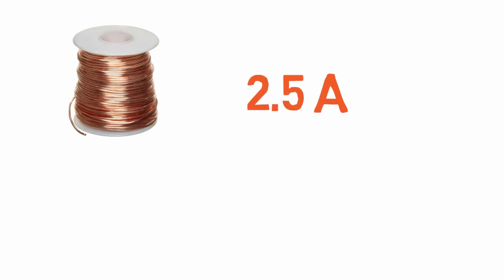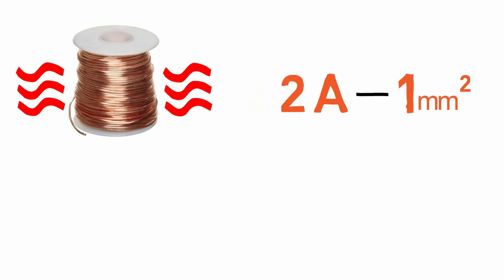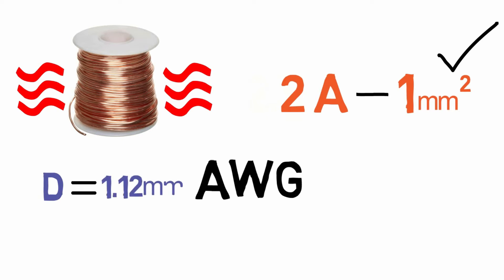Generally for 2.5 amperes of current, 1 mm square cross-sectional area of the wire is sufficient. For more, heat will dissipate and heating losses will increase. According to our design, 2 amperes is the load current, hence the wire having 1 mm cross-sectional area will be sufficient for us. For more details you can see the American Wire Gauge chart, that is AWG chart for reference.